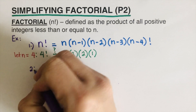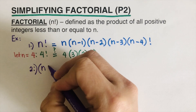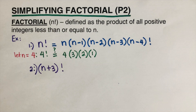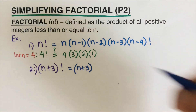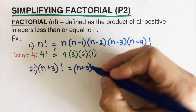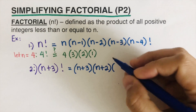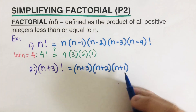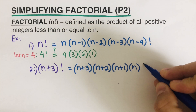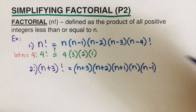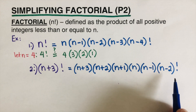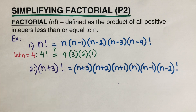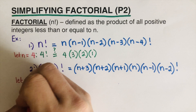For our second example, let's simplify (n+3) factorial. The first term is n plus three, then we go backwards: n plus two, then n plus one, then n, then n minus one, then n minus two, and we write factorial after that, meaning it continues: n minus three, n minus four, and so on. Let's say n equals three to test this.